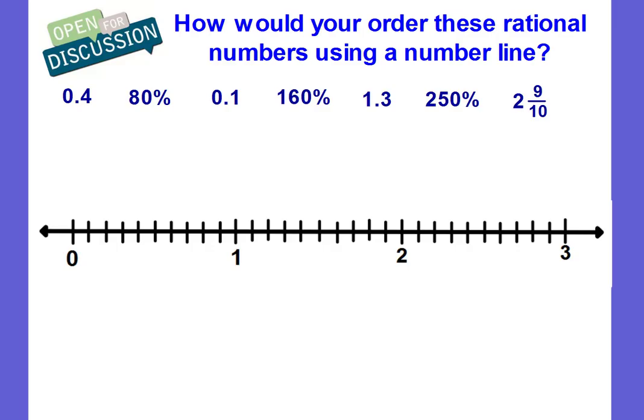Okay, how are we going to order these rational numbers using a number line? Well, take a look. What do you see? I see decimals, I see percents, I see mixed fractions. We have rational numbers in all different forms. And in order to graph them on a number line, we need to convert them to the same form. Either convert them all as fractions, or convert them all as decimals, or all as percent. Whichever you prefer.